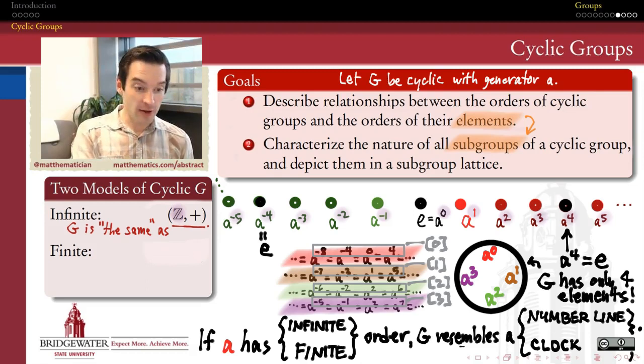So where an infinite cyclic group will sketch us a picture of the integers under addition, a finite cyclic group of order n will sketch us a picture of equivalence classes of integers modulo n, where the operation is again addition, but not addition of integers, rather addition of equivalence classes. So what that tells me is that every finite cyclic group is going to be the same as the group of integers modulo n, where n is the order of the generator.